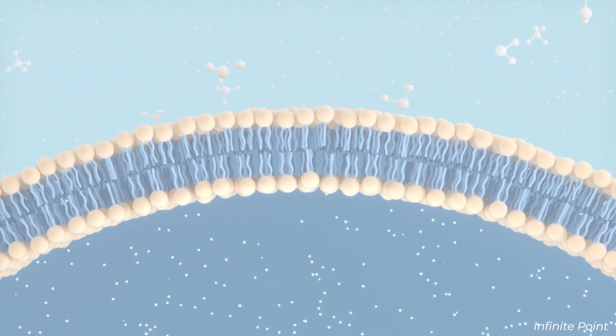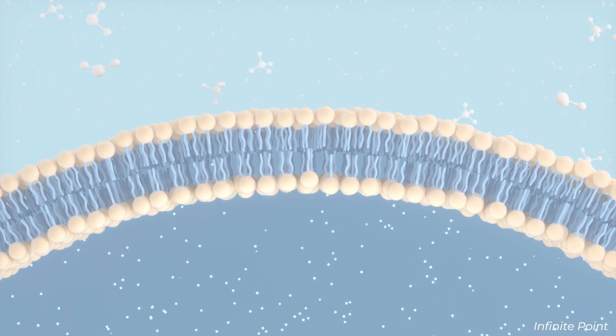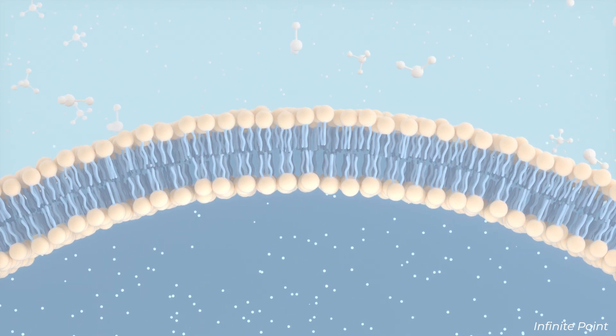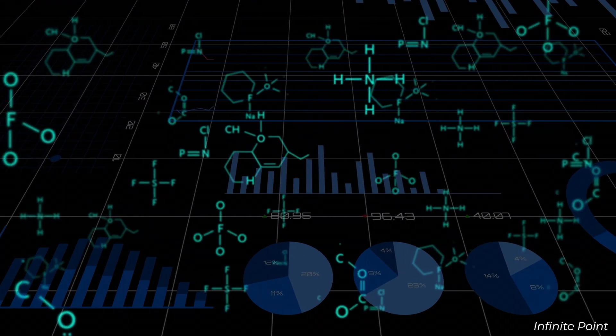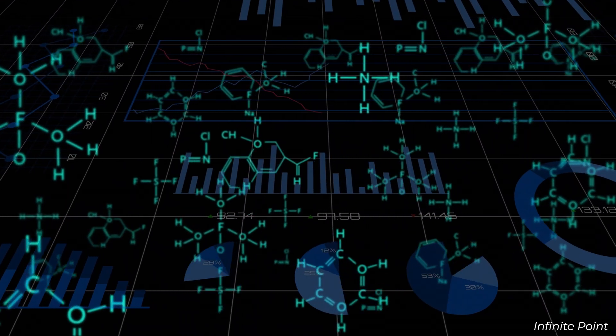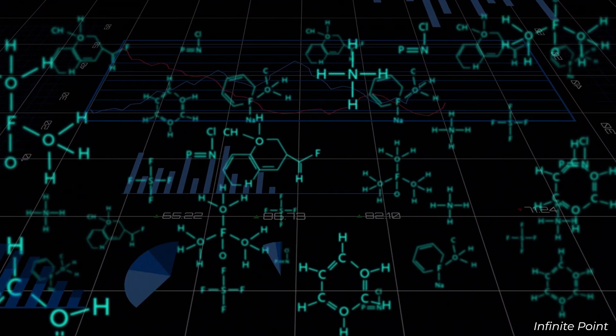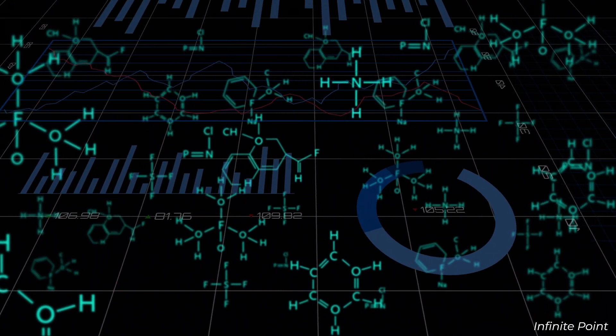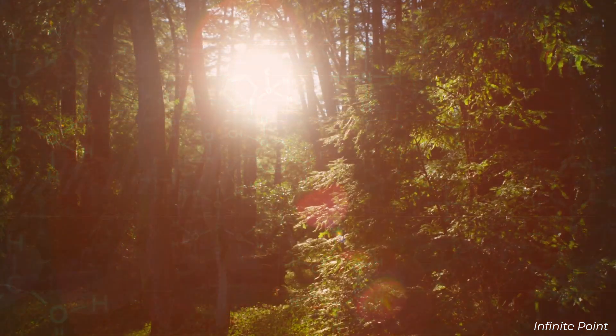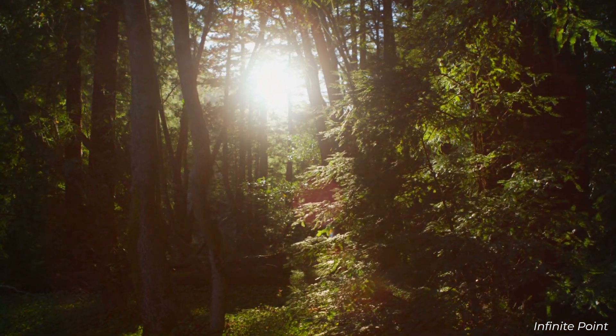These membranes not only provided a physical boundary but also created a controlled internal environment, allowing chemical reactions to occur more efficiently. Some protocells might have developed mechanisms to harness energy from their surroundings, such as absorbing light or chemical gradients.